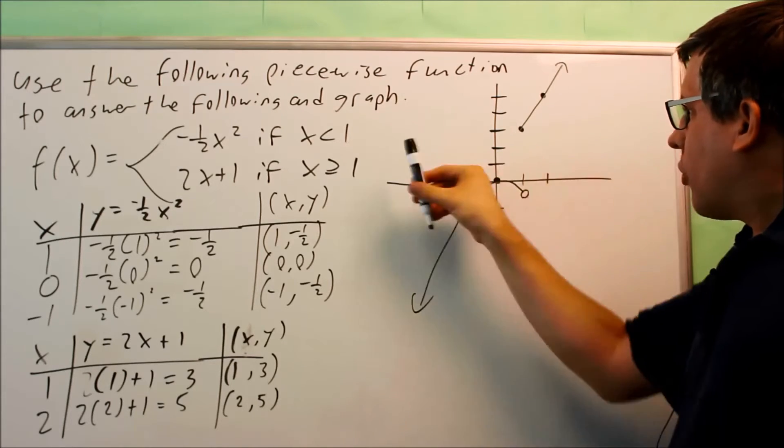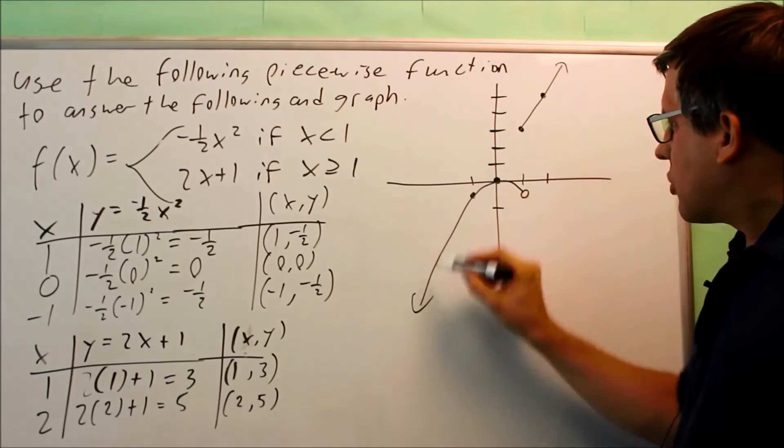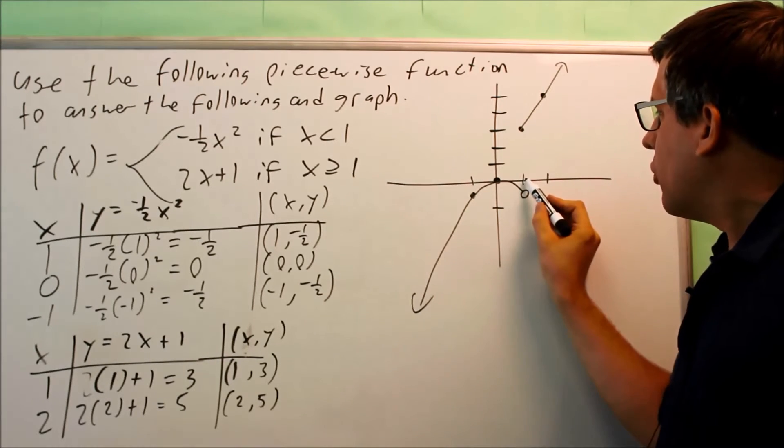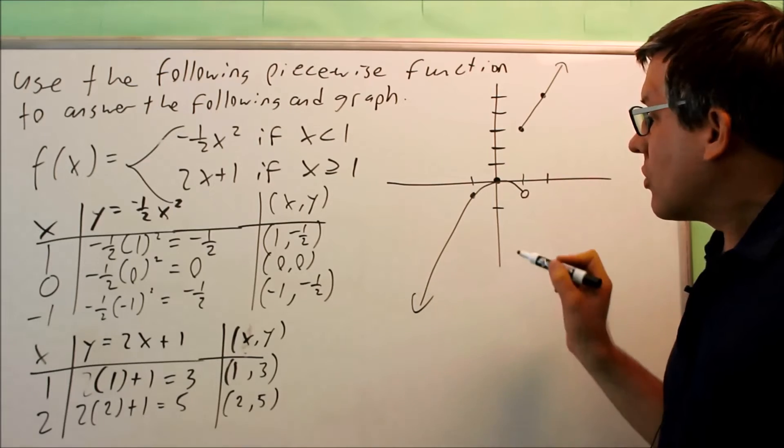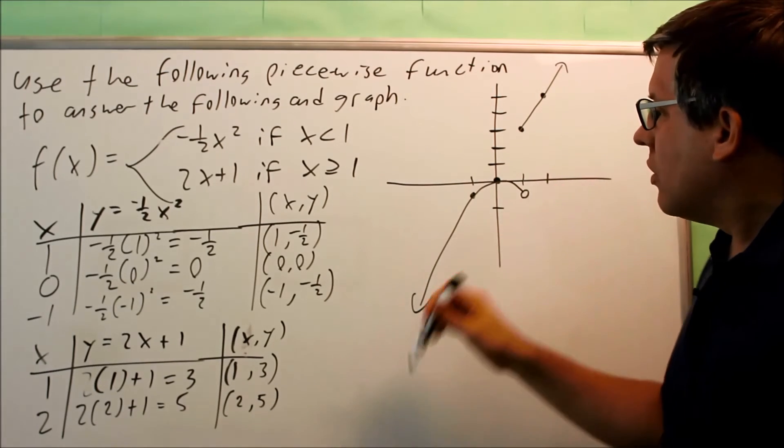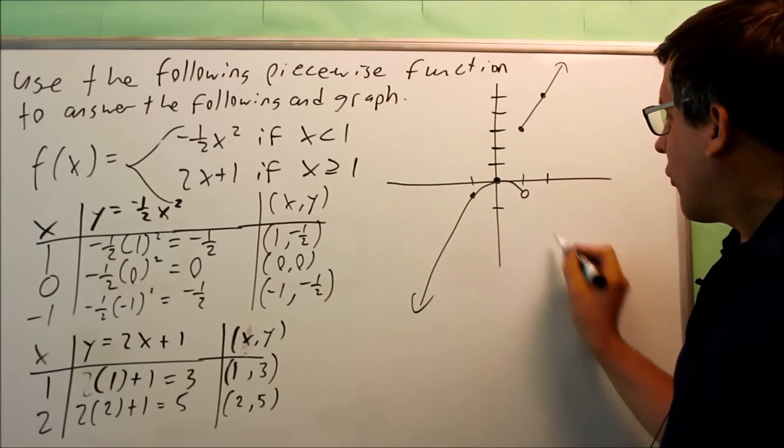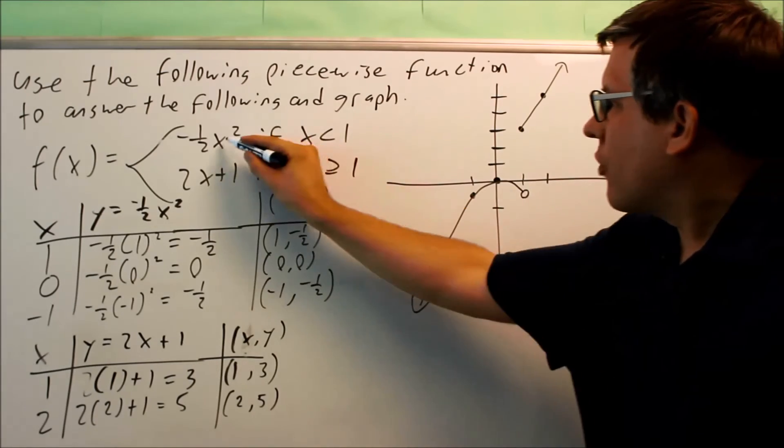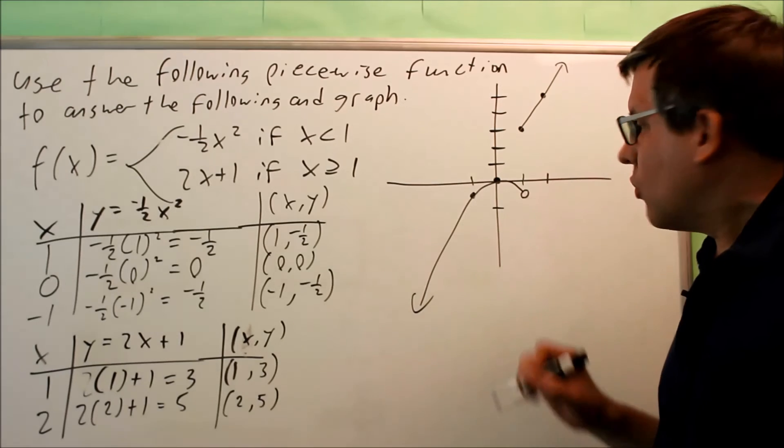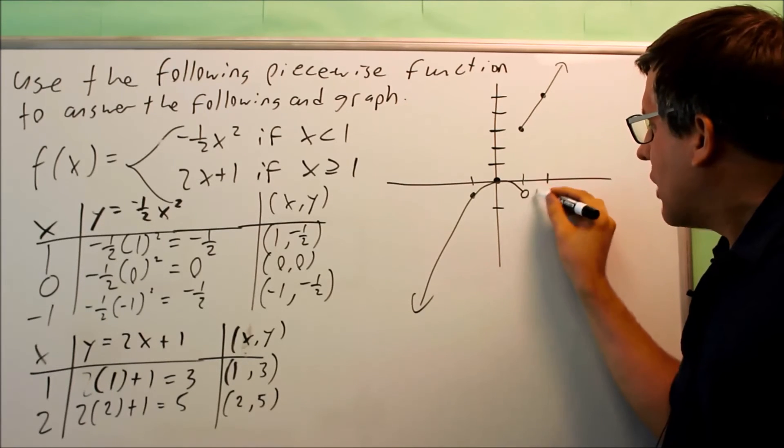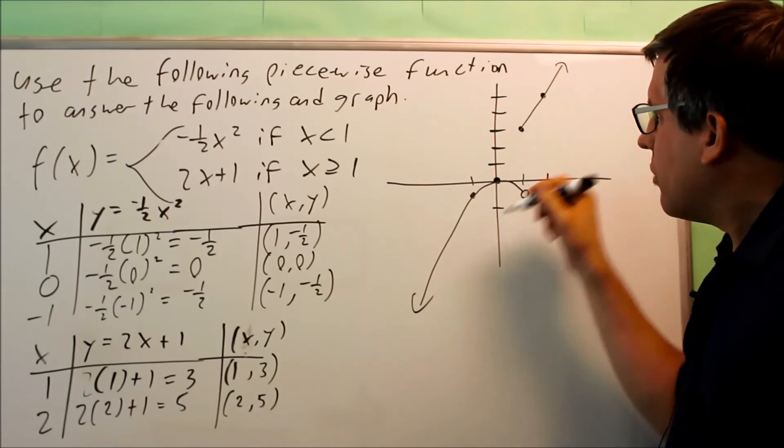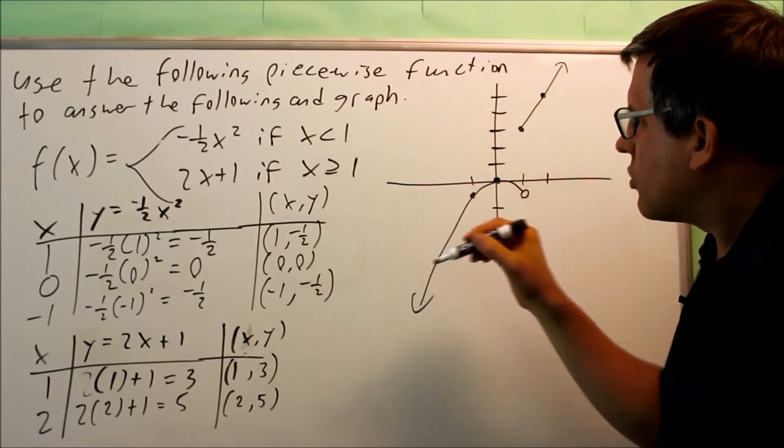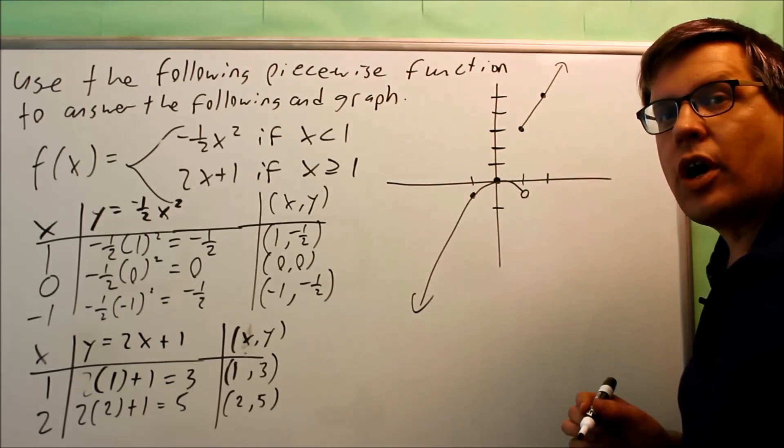Notice, I don't have a line going down this way. The reason why is because I'm only allowed to use values that are greater than or equal to 1. That's why I don't have a graph continuing beyond this open circle here, because you can only use values that are less than 1 only for the first equation. It's like an ending point there. That's why it's really important to make sure that you use these numbers on your conditions.